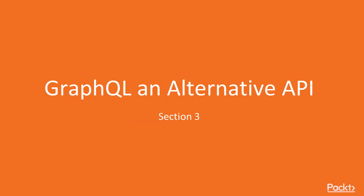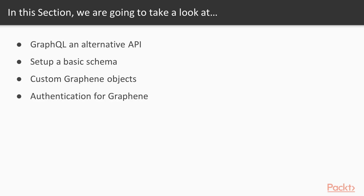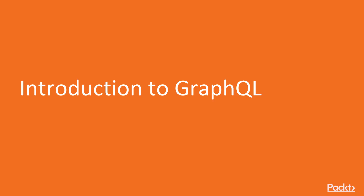In this section, we're going to be looking at GraphQL as an alternative API. This section will be comprised of four videos. We'll be getting an introduction to GraphQL, learning how it works, and comparing it to the REST framework. We'll learn about all of the internals of GraphQL and the different pieces that make it function. We'll be learning how to use Graphene, Django's GraphQL library, to build custom objects, and we'll be looking at authentication libraries for Graphene.